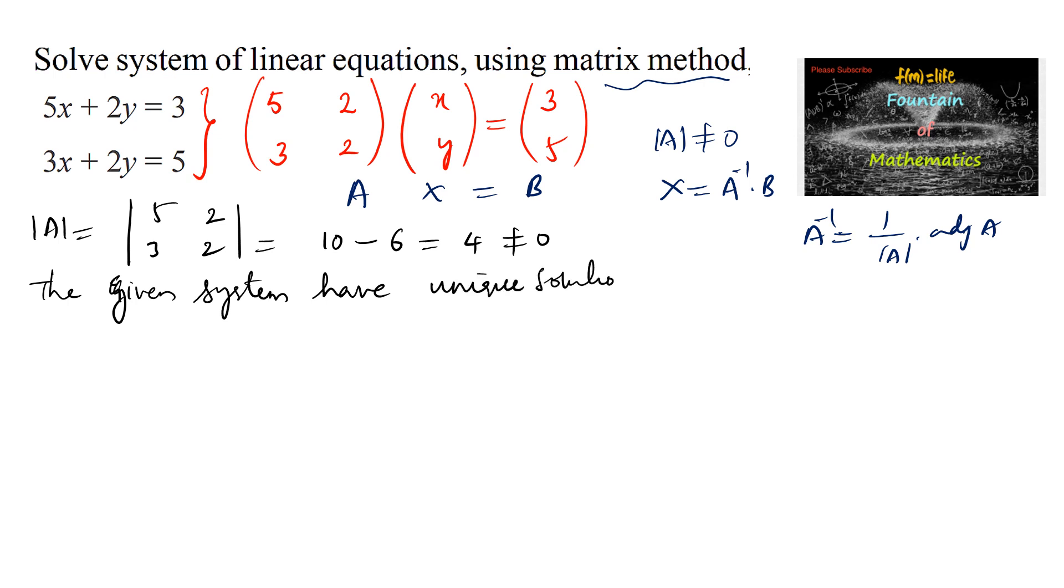We can find the solution by taking X equals A inverse into B. So we have A inverse is equal to 1 by the determinant, that is 4, into adjoint of the matrix. For a 2 by 2 matrix, we interchange the diagonal elements as 2 and 5, and the non-diagonal elements change sign to negative 2 and negative 3.